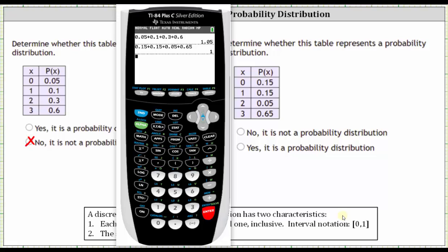Notice in this case, the sum of the probabilities is one, and therefore the conditions have been met. The answer is yes, this is a probability distribution.